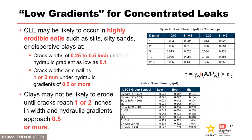You cannot just discuss gradient for concentrated leak erosion. Gradient must be discussed in the context of erodibility along with assumed dimensions. In this example, concentrated leak erosion may be likely to occur in highly erodible soils such as silts, silty sands, or dispersive clays at crack widths of 0.25 to 0.5 inch under a hydraulic gradient as low as 0.1, or crack widths as small as 1 or 2 millimeters under hydraulic gradients of 0.5 or more. Clays may not be likely to erode until cracks reach 1 or 2 inches in width and hydraulic gradients approach 0.5 or more.